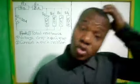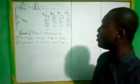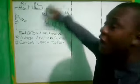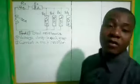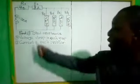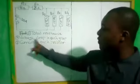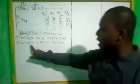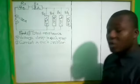Welcome to my YouTube channel. As you can see on the board, we have four resistors connected in parallel and two resistors connected in series. We are asked to calculate the total resistance, the voltage drop in each group, and the current in each of the resistors.